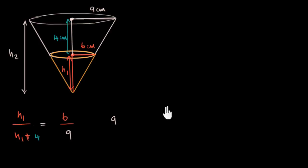So it's going to be 9 h1 equals 6 h1 plus 4 into 6, so 6 h1 plus 24. Now I can subtract 6 h1 on both sides. That will give me 3 h1 on this side and 24 on this side, which finally gives me h1 equals 8 centimeters.